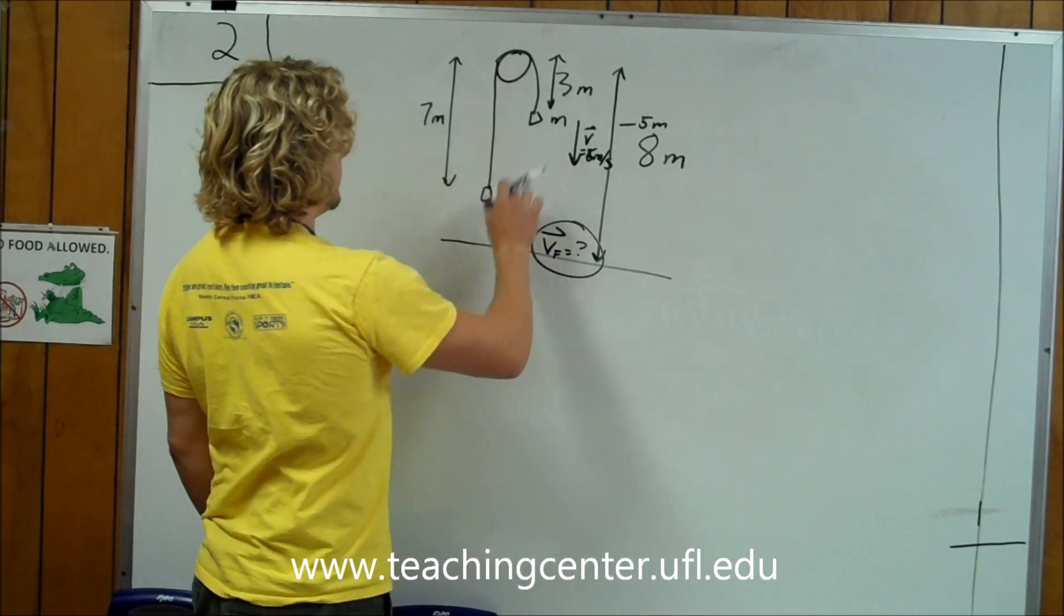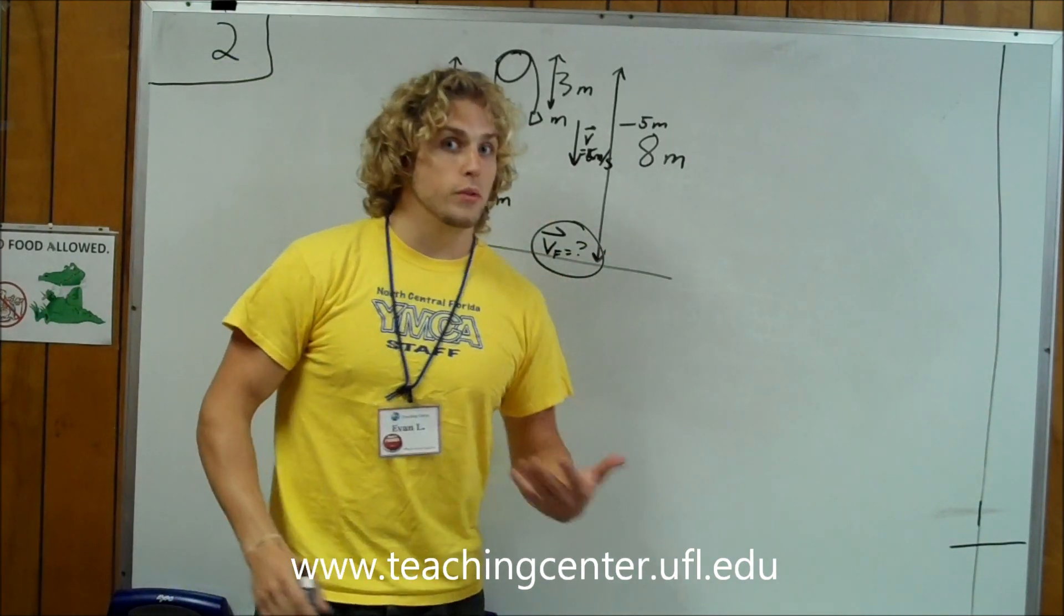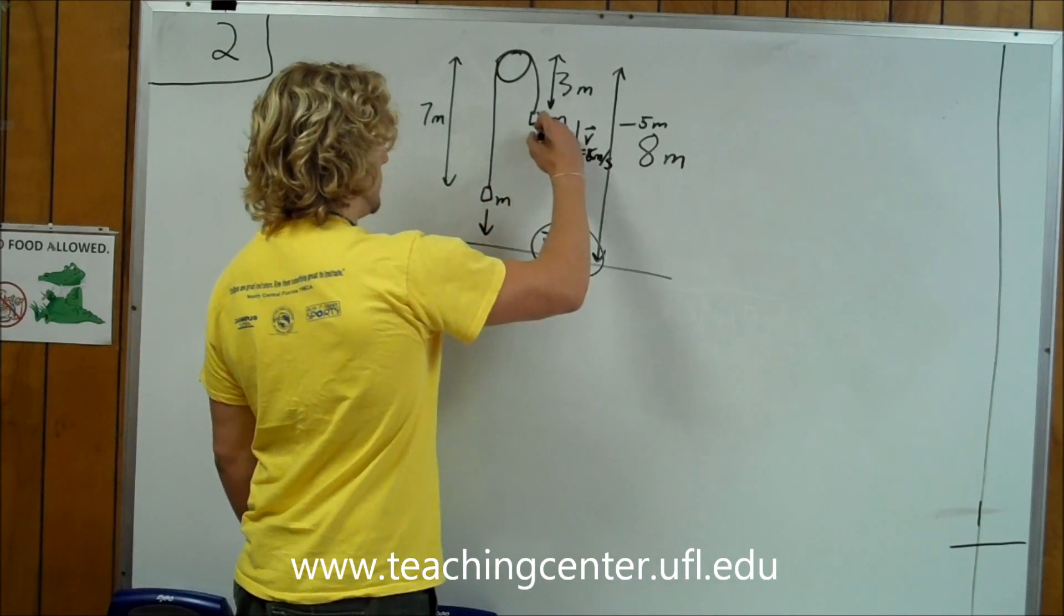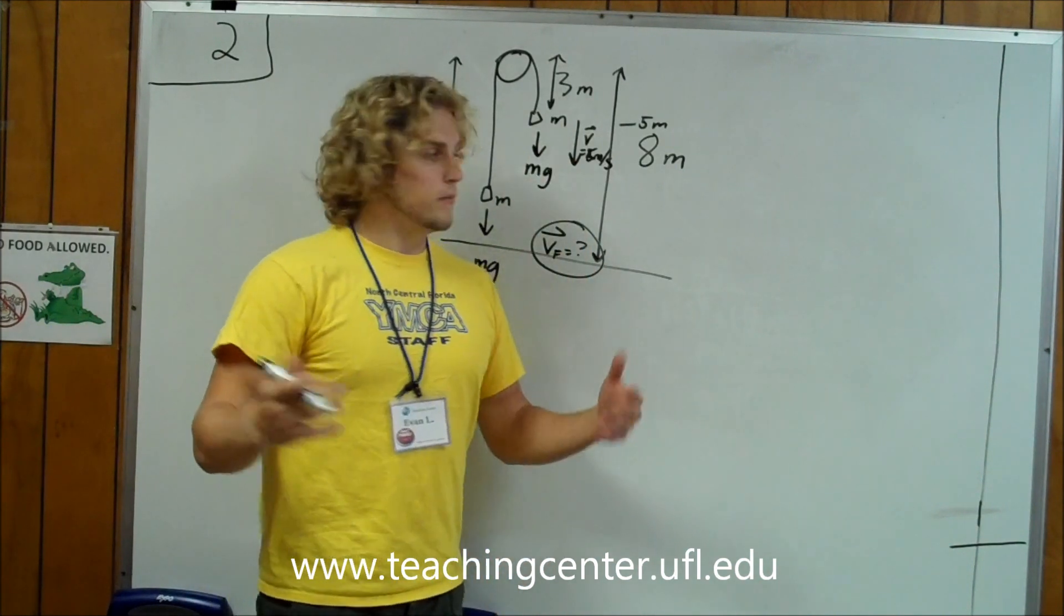Really, you have two equal masses on a frictionless pulley and those are the only things that are affecting it. So you have mg being pulled down here as well as mg being pulled down here.